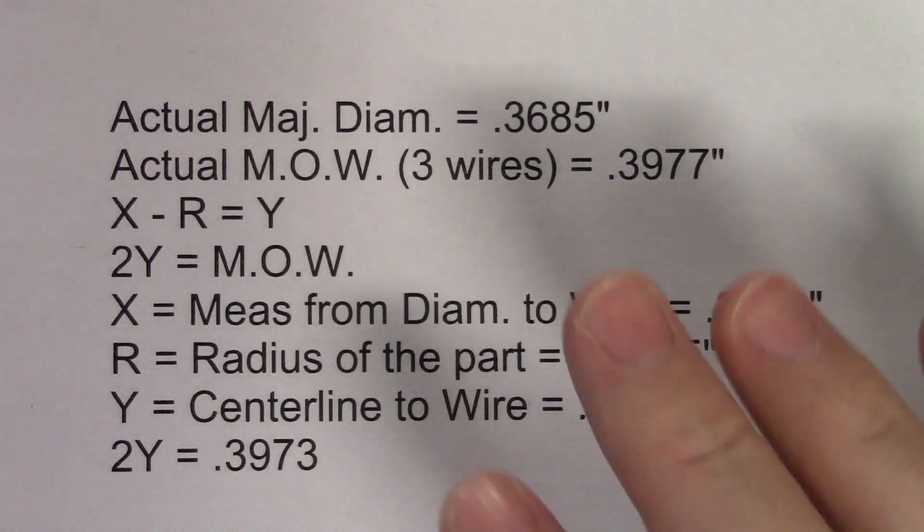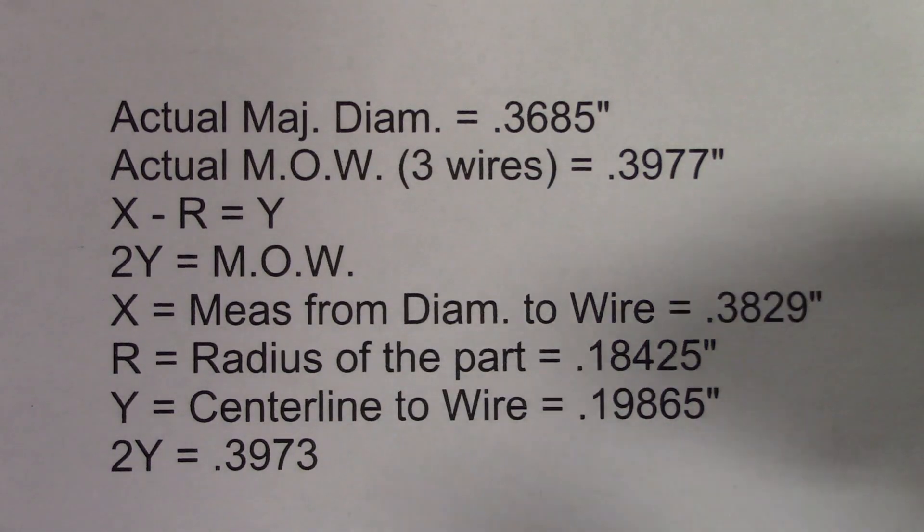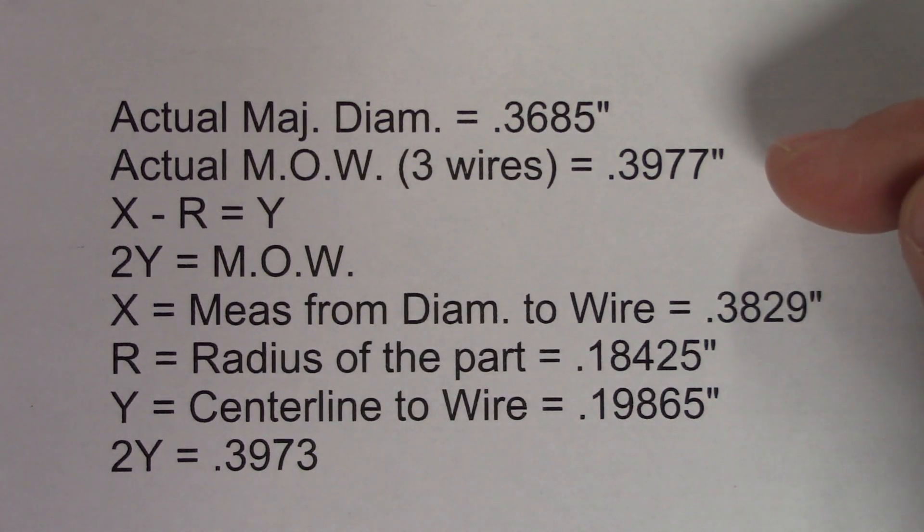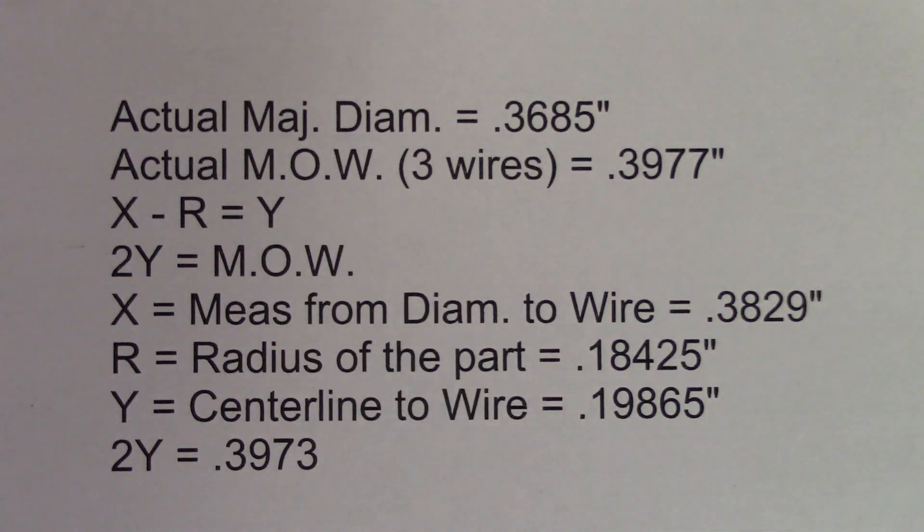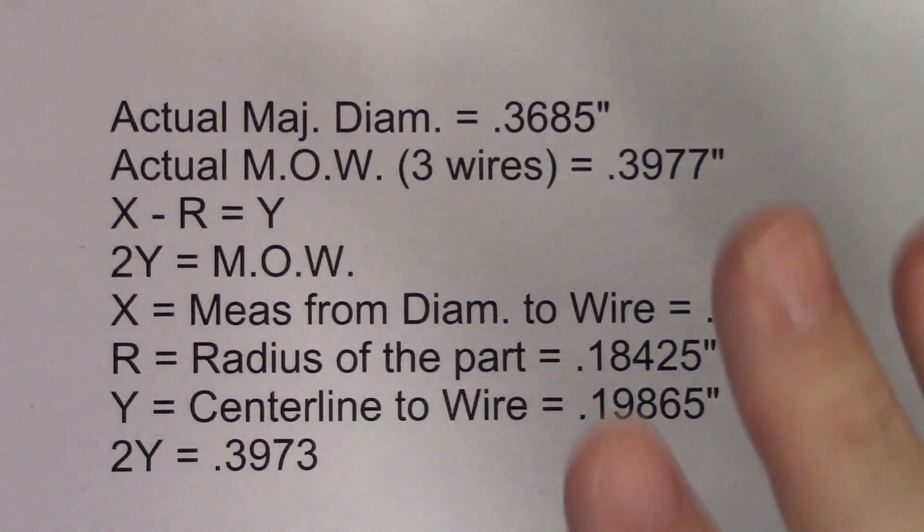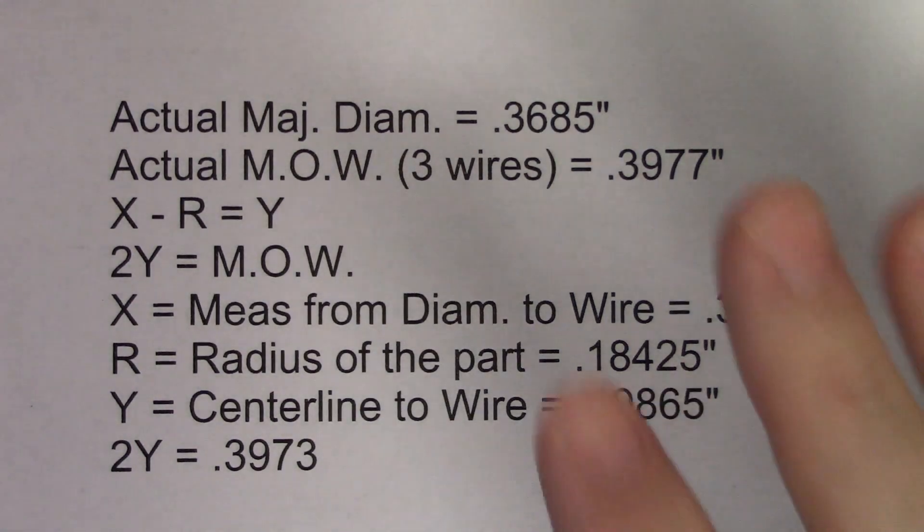You can plainly see that when comparing the measurements from both. My actual measurement over the wires using the three-wire method was .3977 inches, while the one-wire method comes in at .3973. Those are two very different measurements of the exact same thread.